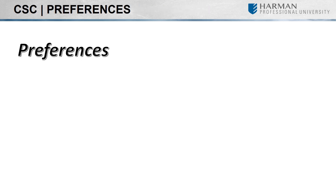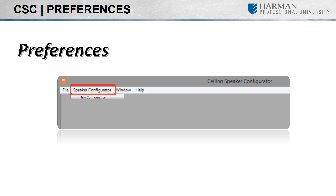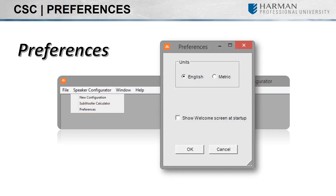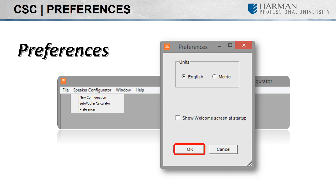Let's explore the available software features in CSC. We will start by going to the Speaker Configurator menu and to Preferences. Here we will find a global setting for the unit of measurement. We can either select English values such as feet or metric values such as meters. After selecting the desired unit of measurement, we then click OK. The selected value will be maintained after exiting CSC, so this shouldn't be a setting you need to change for every new application.